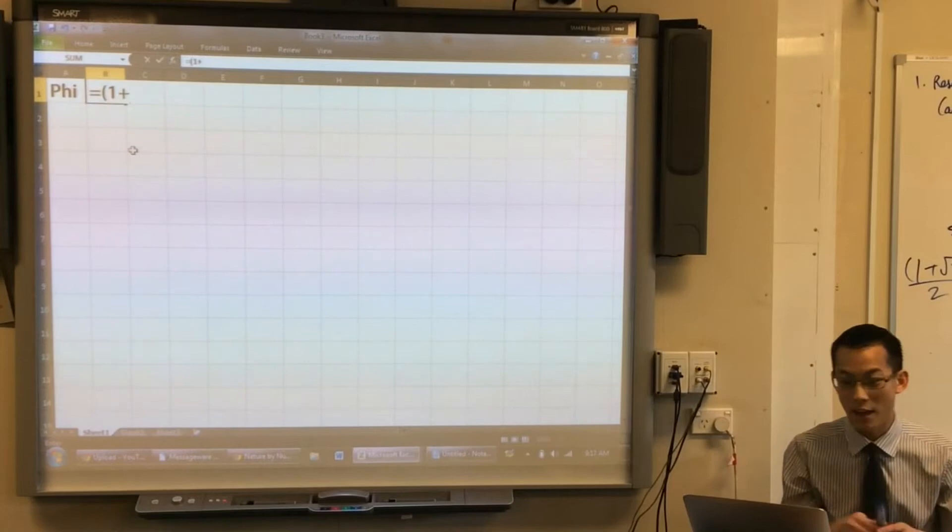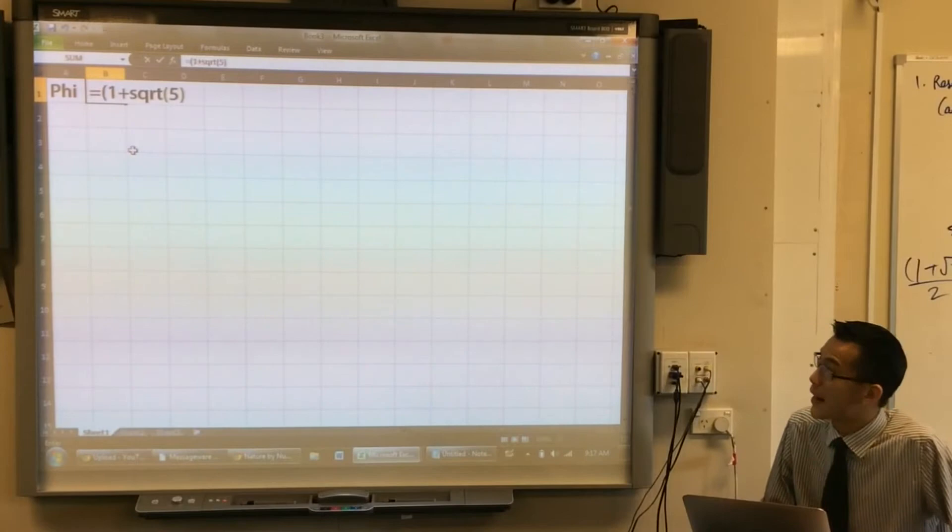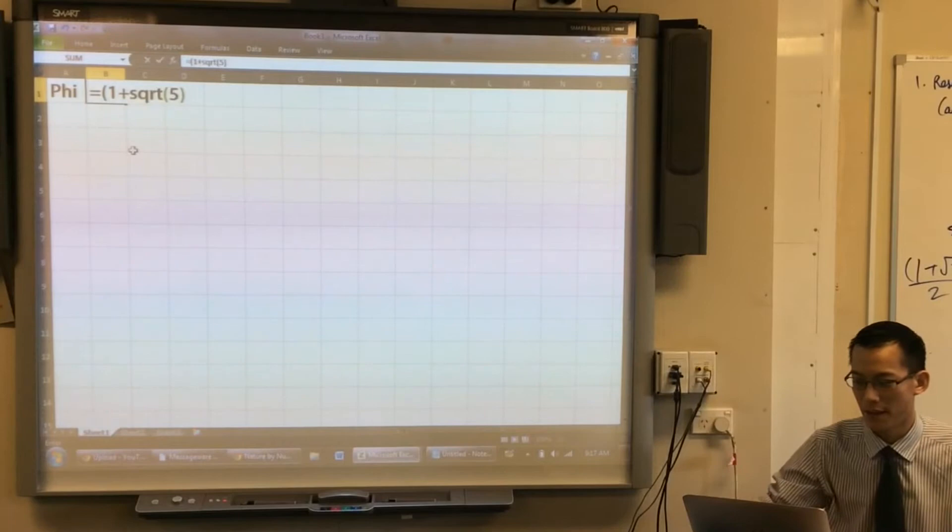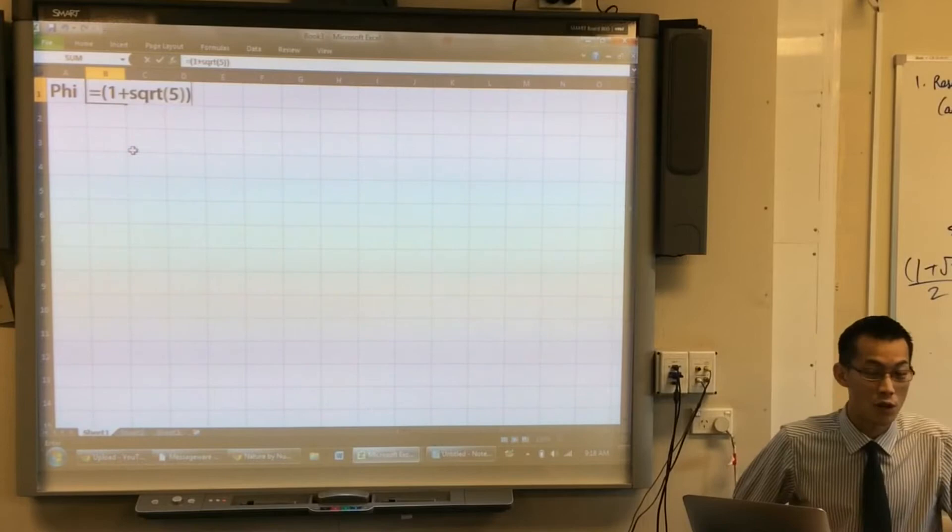If you look on your keyboard, there's no square root button. So in order to write a square root, you write sqrt, because that's the abbreviation for square root. So you write sqrt, and then in brackets, 5. That'll calculate the square root of 5 for you. So far, so good?